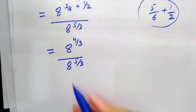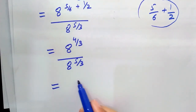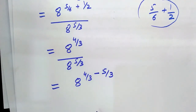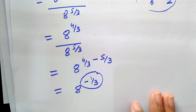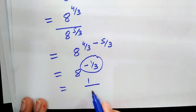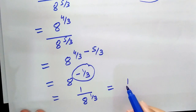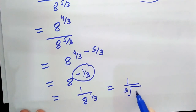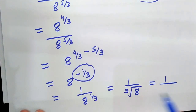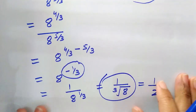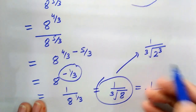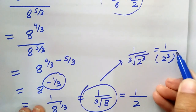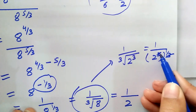Using the law of exponents for division, we subtract the exponents: 4/3 minus 5/3 equals negative 1/3. So we get 8 raised to power negative 1/3. Making the exponent positive gives 1 divided by 8 raised to power 1/3. Since 1/3 is the cube root, this is 1 over the cube root of 8. Writing 8 as 2 cubed, the cube root cancels and we get 1/2.